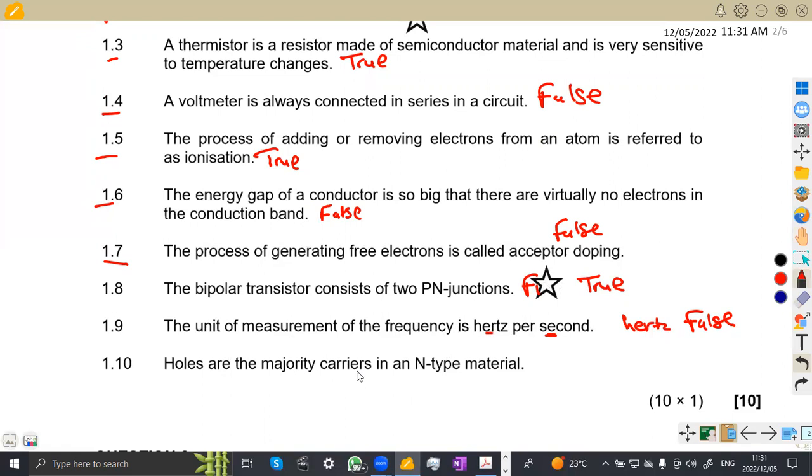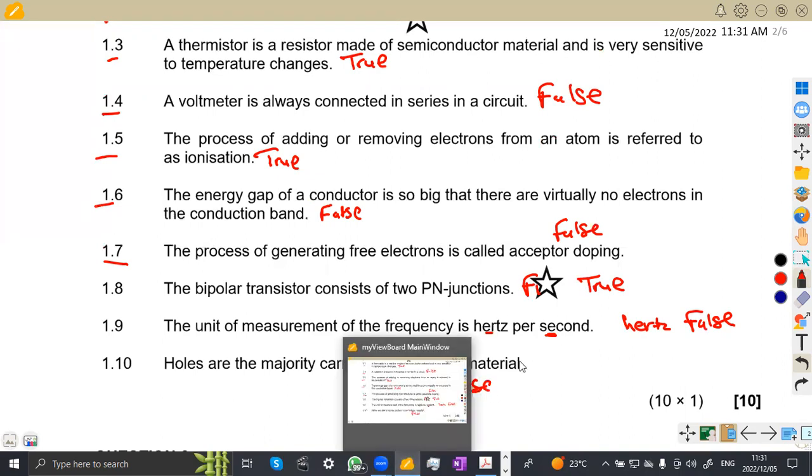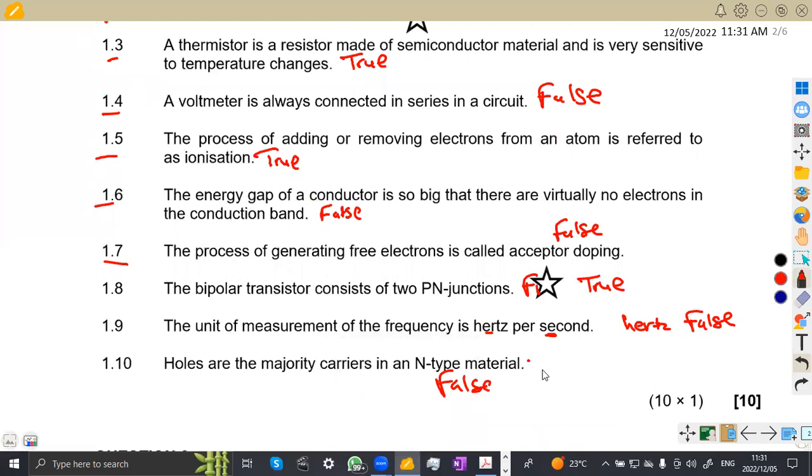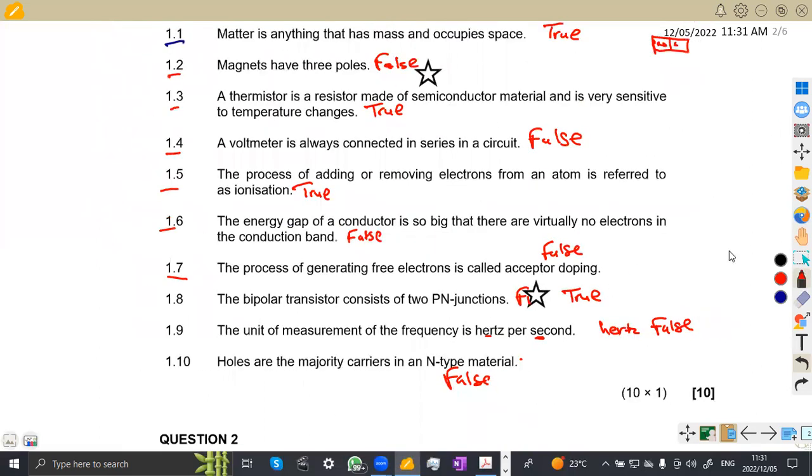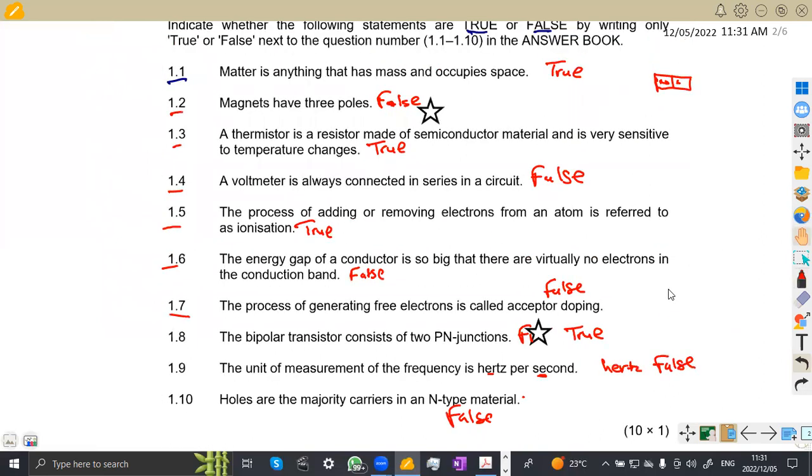Holes are the majority carriers of any type material. The holes, guys, is this the holes that we have? This is a no. So that one is false. We are not having the holes. Holes are found in the P type, not the N type. So if you are referring to the P type, that is where we've got the holes.